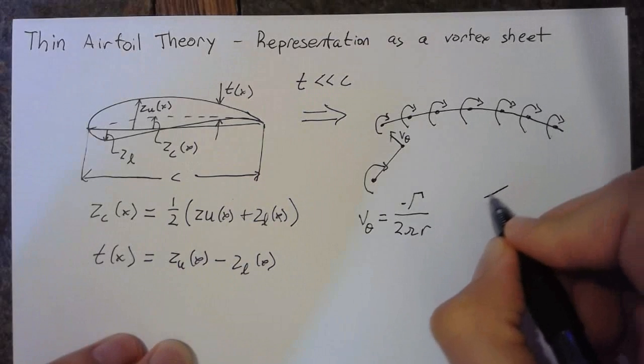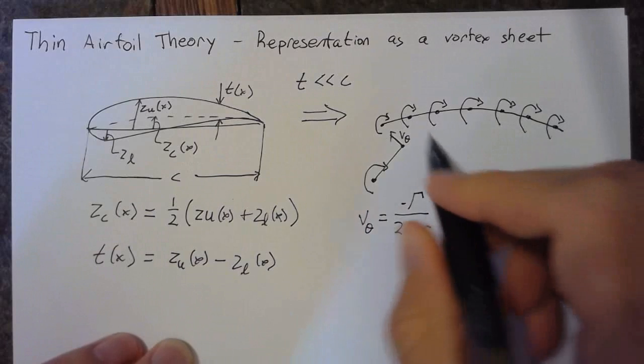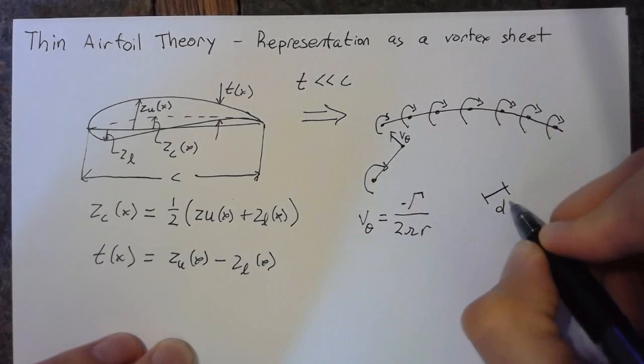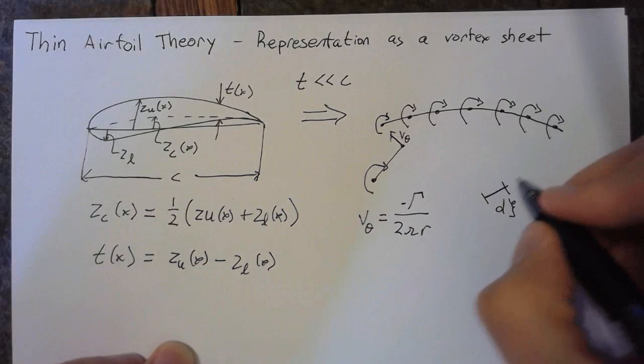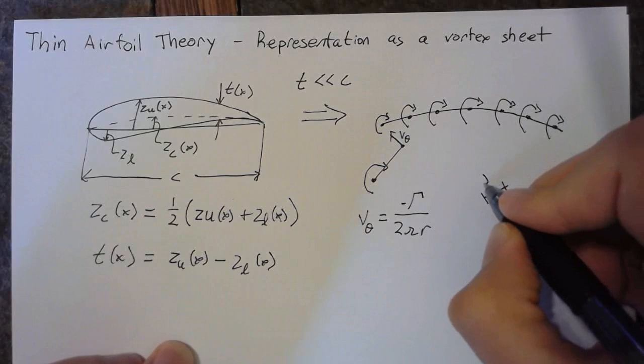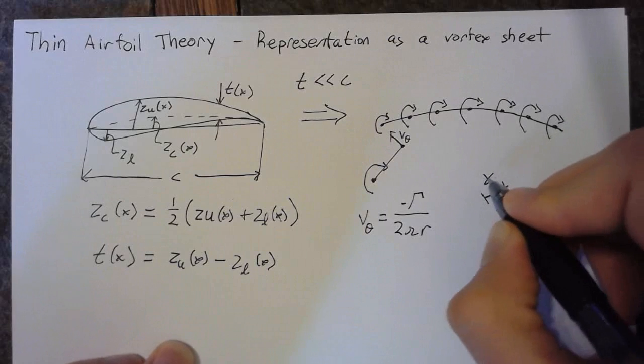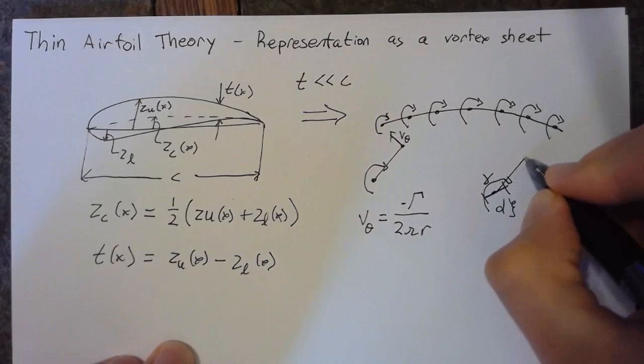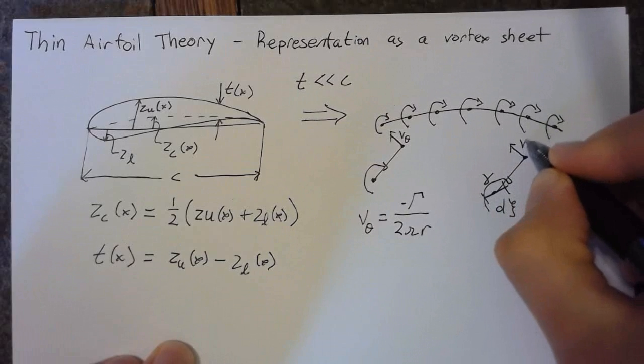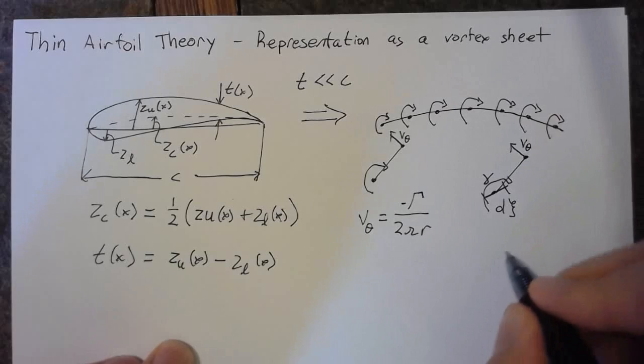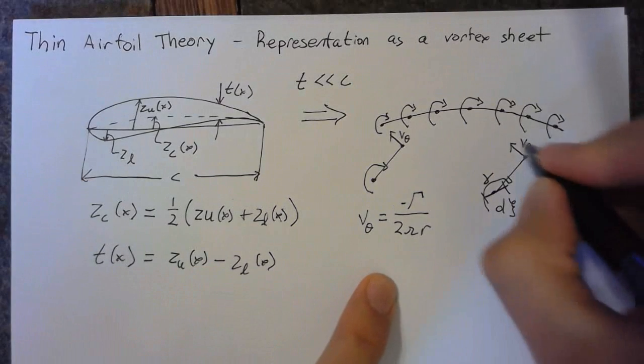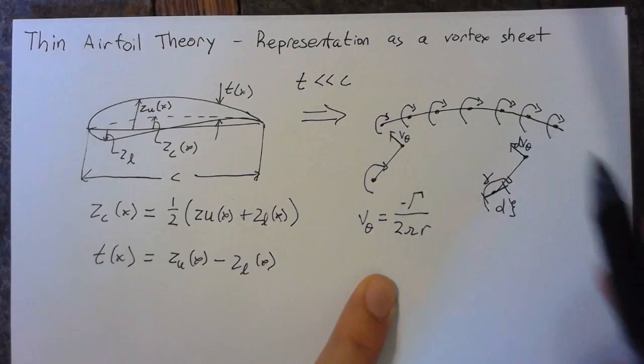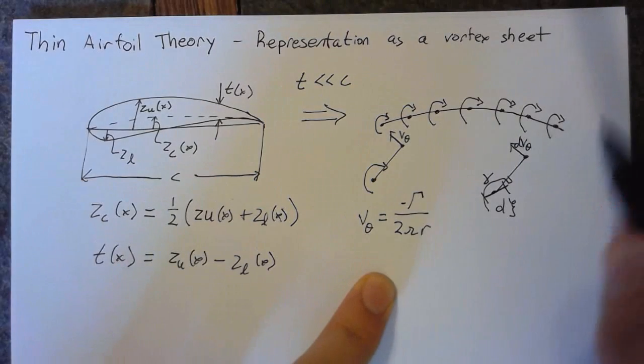Likewise, with our vortex sheet, we can subdivide this into a whole bunch of small panels of size d xi. And each of these panels is going to have some strength per unit length gamma, lowercase gamma, and will likewise cause some velocity at a point v theta. In this case, we want to use a differential d v theta because we're only looking at part of the vortex sheet, not the entire thing.